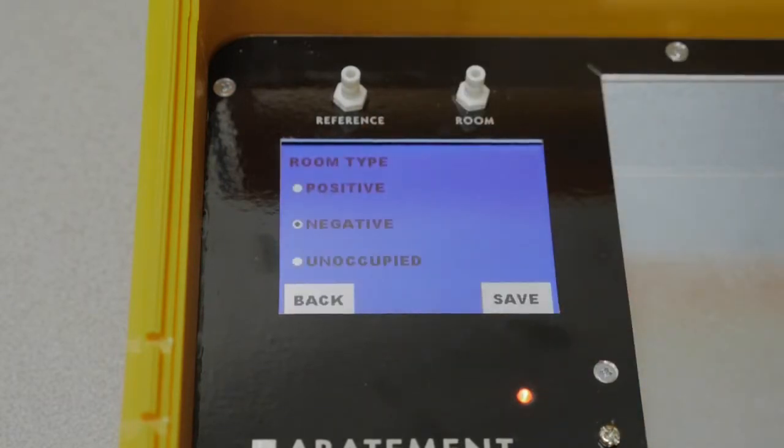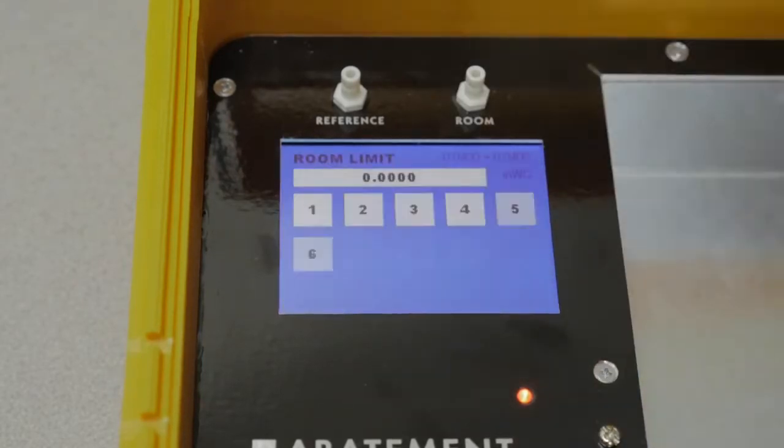Select room types and you can set the type of differential pressure to be monitored. The options are positive, negative, or unoccupied. Select room limits to set the pressure alarm.